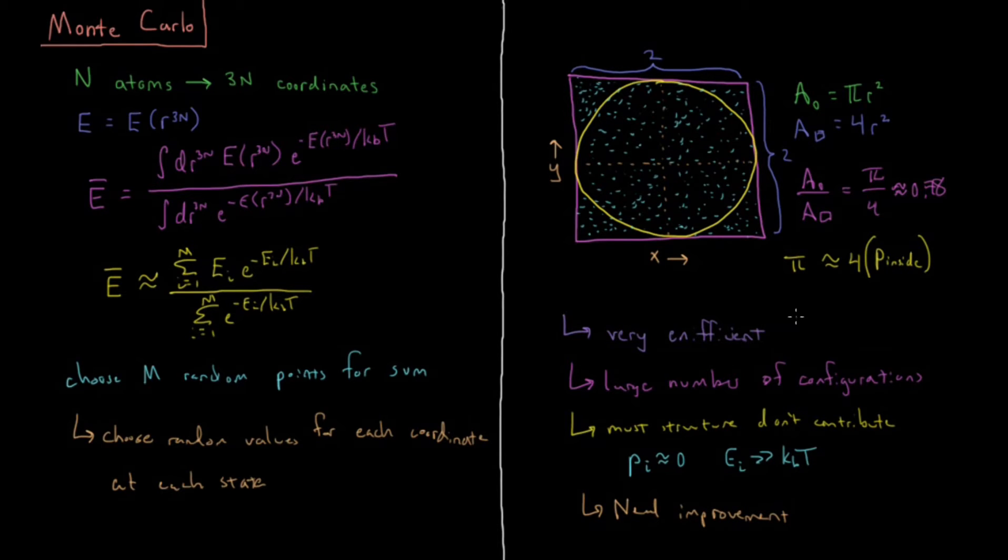So it just works out that in practice that the limit as M goes to infinity of this value here of four times that probability P in is equal to pi. Any finite number, it'll have some error. Some will be above, some will be below, but over a large number in the limit of going to infinity, you'll get pi.